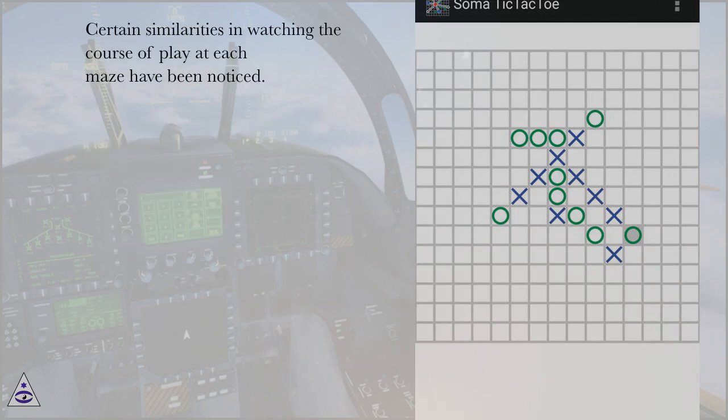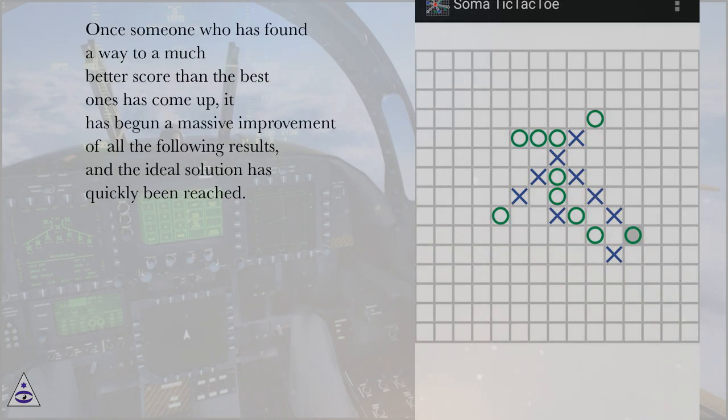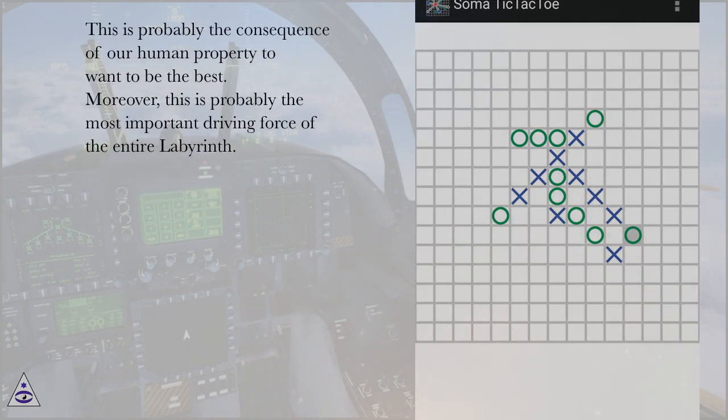Certain similarities in watching the course of play at each maze have been noticed. Once someone has found a way to a much better score than the best ones, it has begun a massive improvement of all the following results, and the ideal solution has quickly been reached. This is probably the consequence of our human property to want to be the best. Moreover, this is probably the most important driving force of the entire labyrinth.